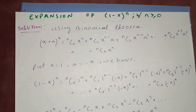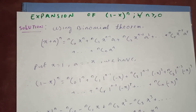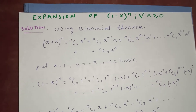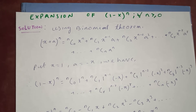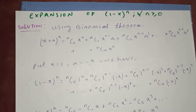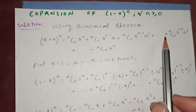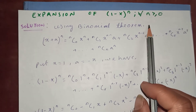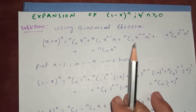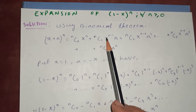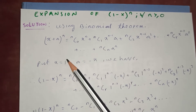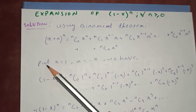Thanks for watching my video today. Let's try to prove the expansion of (1 minus x) to the power n, where n is greater than or equal to 0. We are going to use the binomial theorem, which I have proved previously.